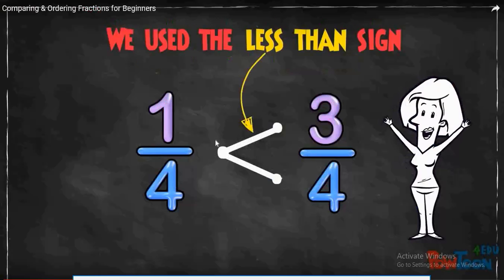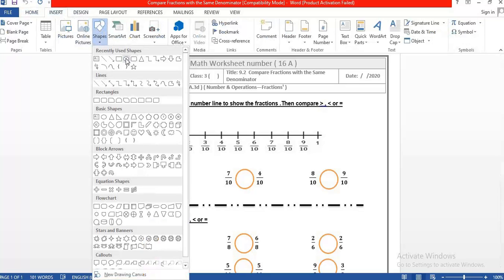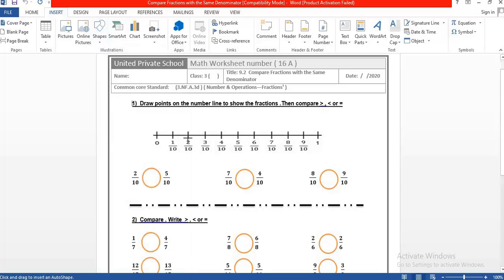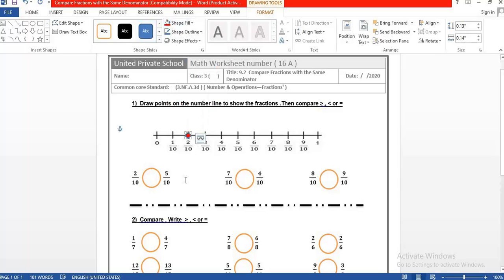Now we will solve this worksheet and practice comparing fractions with the same denominator. Question one: draw points on the number line to show fractions, then compare. We have 2 over 10 and 5 over 10. This number line will help you know which fraction is the highest. We find 2 over 10 here on the number line, and then 5 over 10 here.